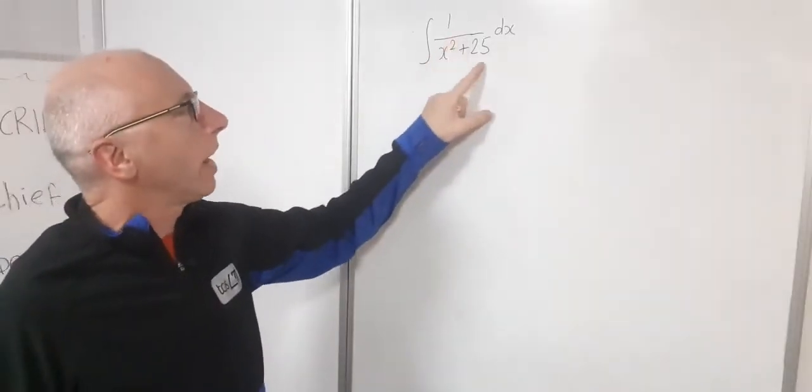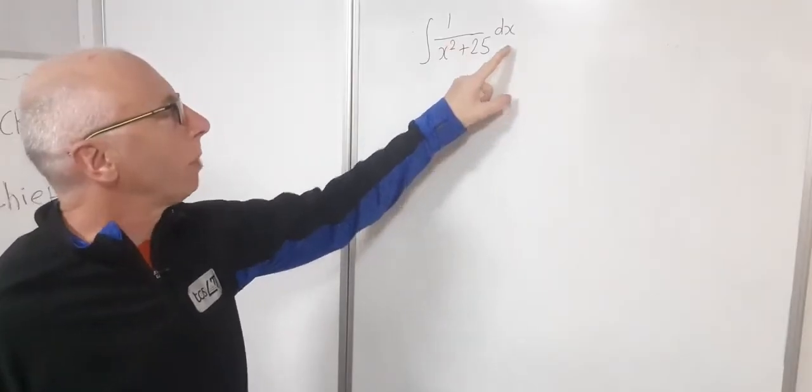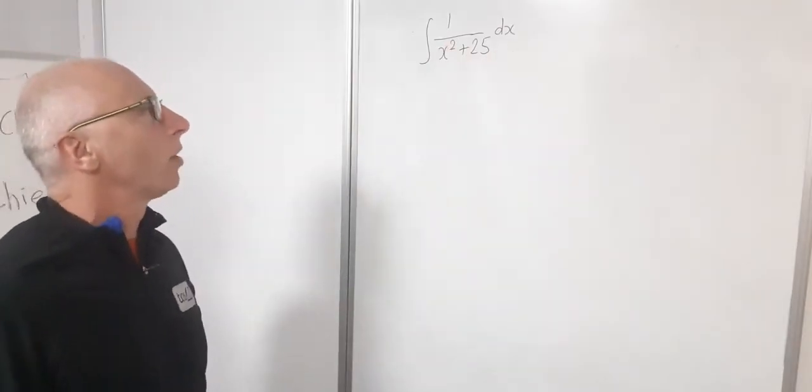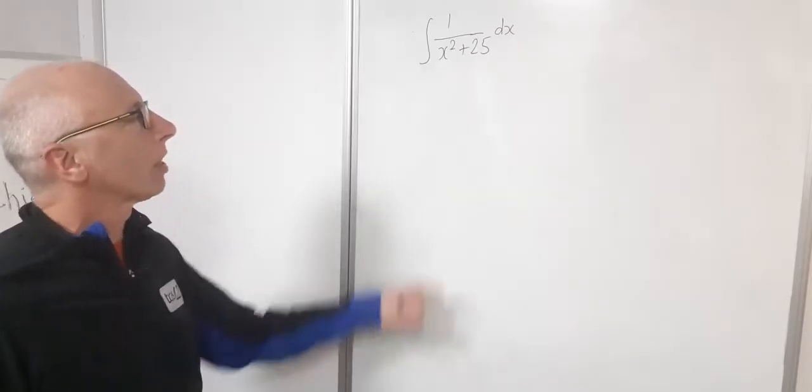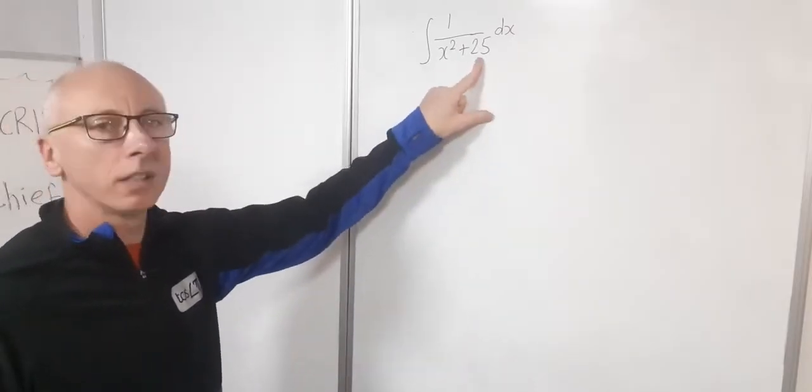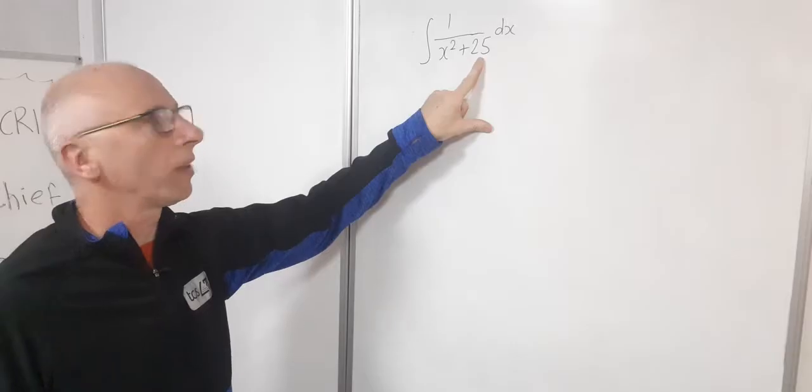So I've got an integral here, 1 over x squared plus 25 with respect to x. Now it looks very tempting to do partial fraction decomposition, but I can see we've got an x squared here and this 25 I know is 5 squared.